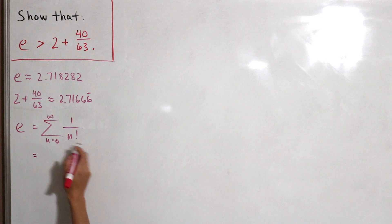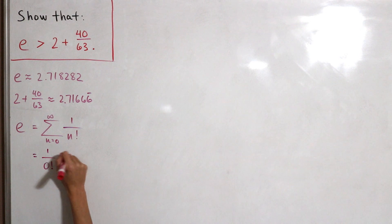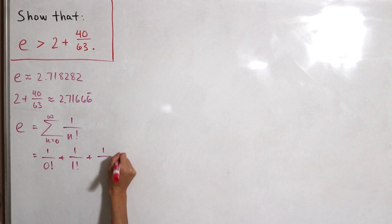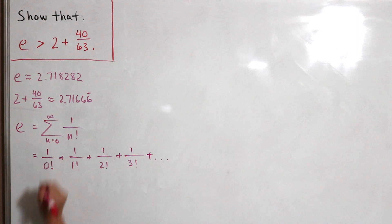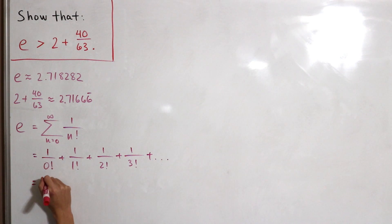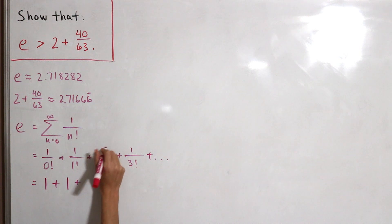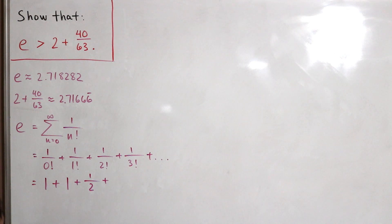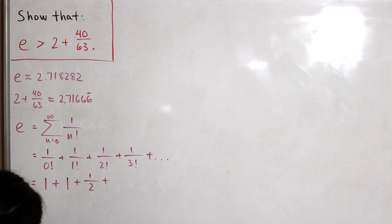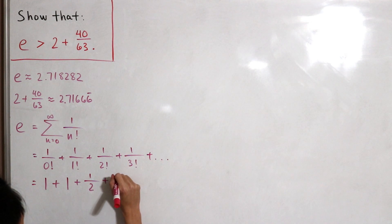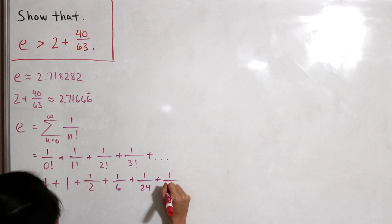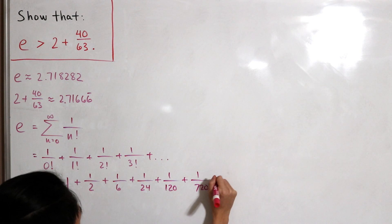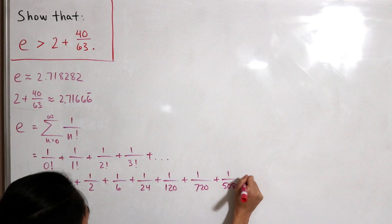Let's expand this infinite sum. Our first term starts at n equals 0: 1 divided by 0 factorial, then 1 divided by 1 factorial, plus 1 divided by 2 factorial, and so on. Evaluating these terms: 1 over 0 factorial is 1, 1 over 1 factorial is 1, 2 factorial is 2 so 1 half, 1 over 3 factorial is 1 over 6, then 1 over 24, 1 over 120, 1 over 720, 1 over 5040, and the series continues.